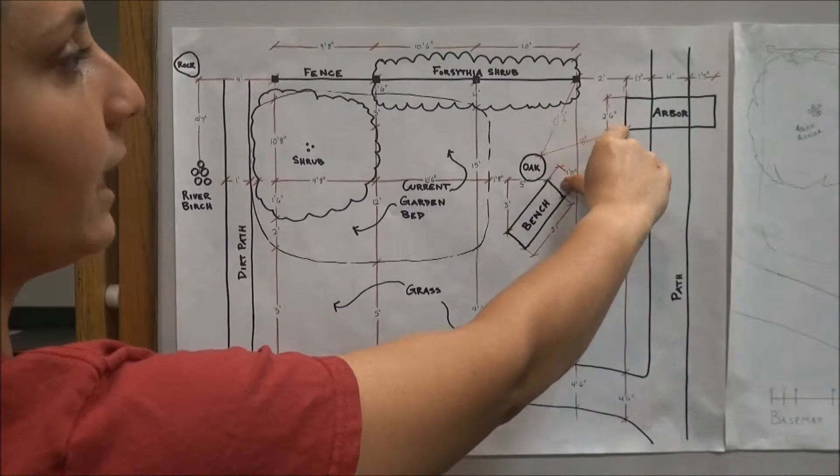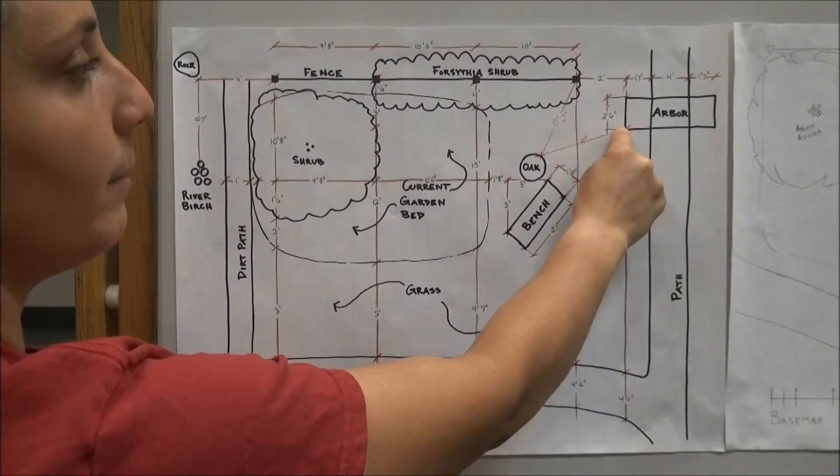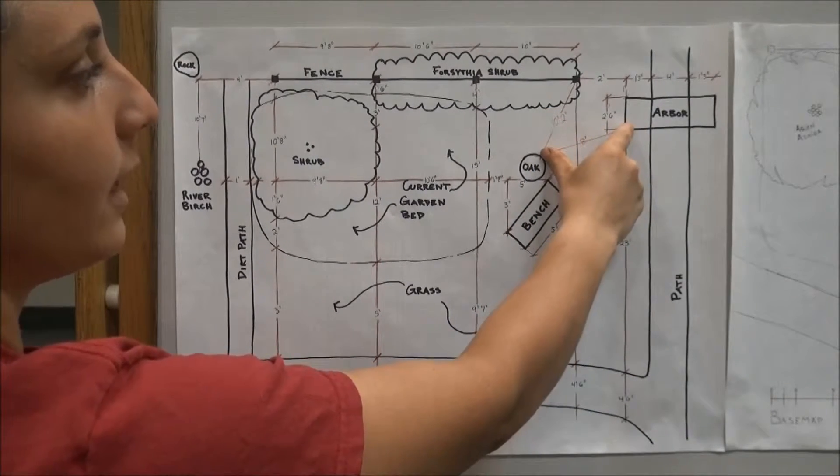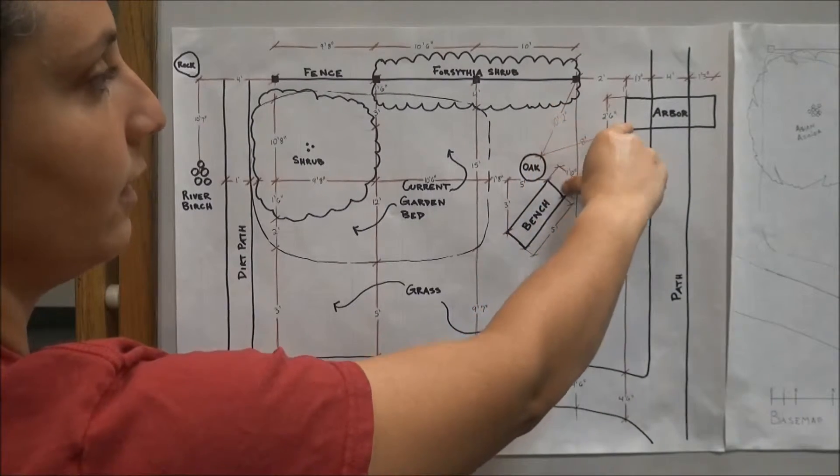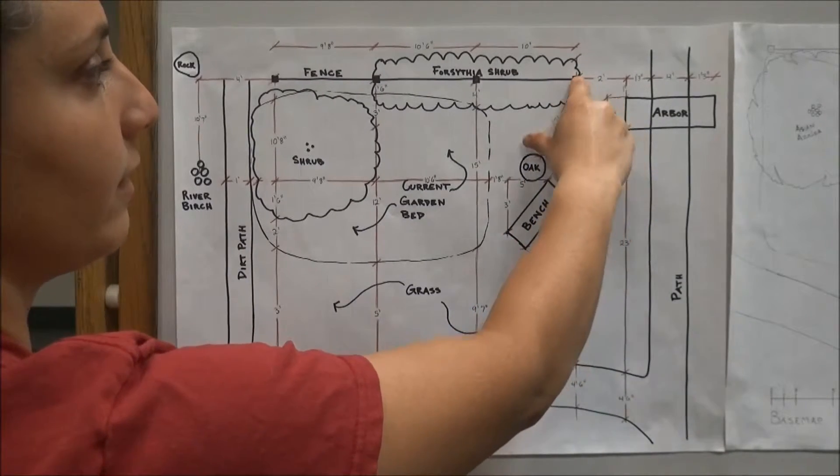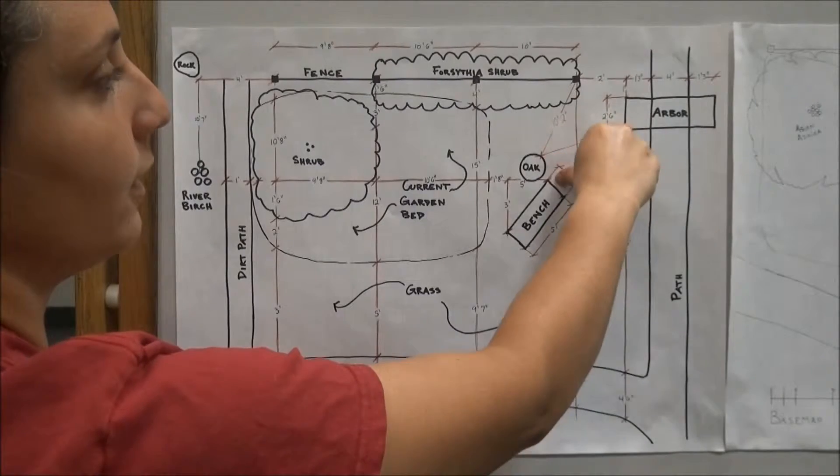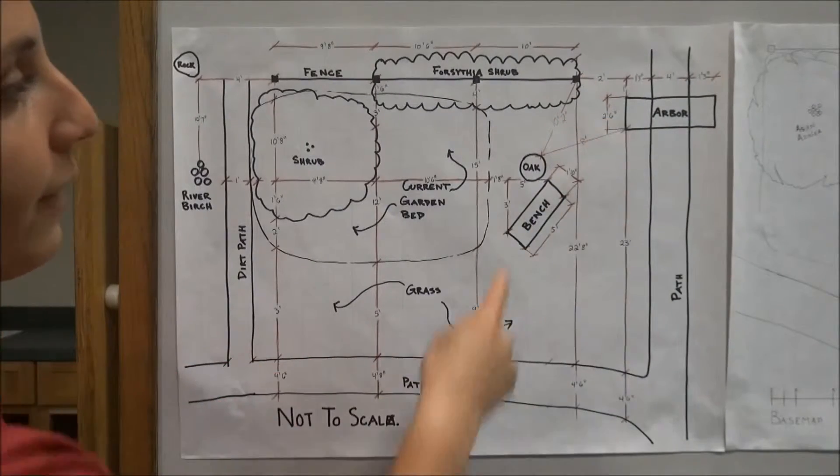So each of these points are measured to the oak and I don't know where the oak is in space yet, but I do know that this is the center of a circle and this is the radius of my circle. And I need to find where this circle and this circle intersect to find my third point.